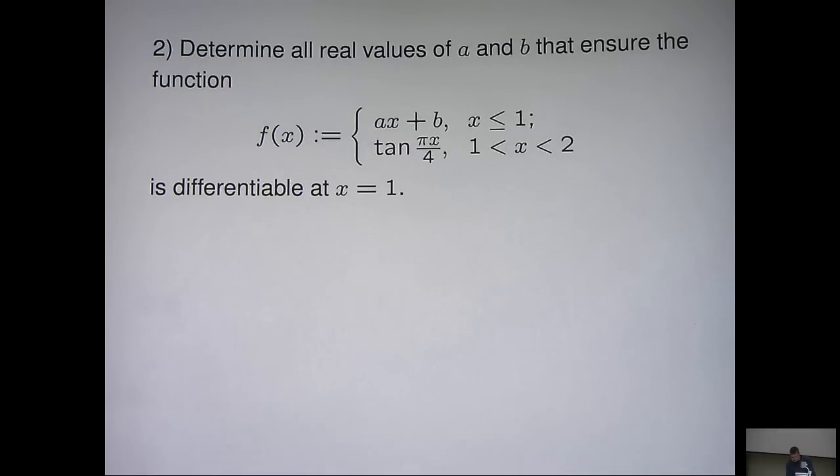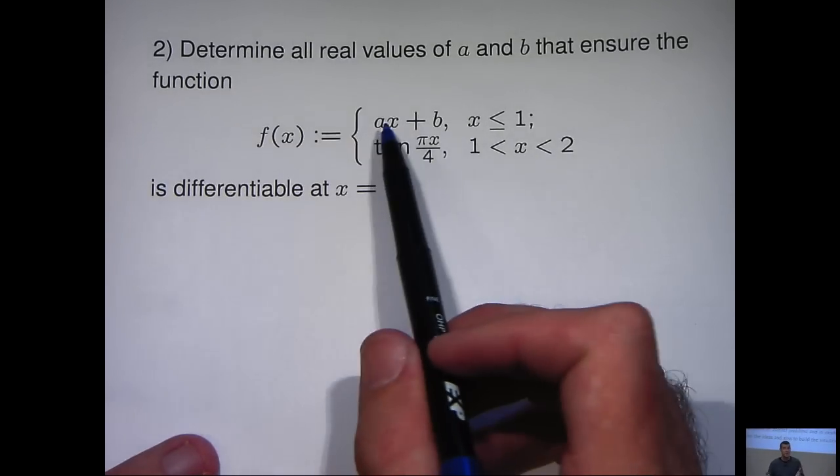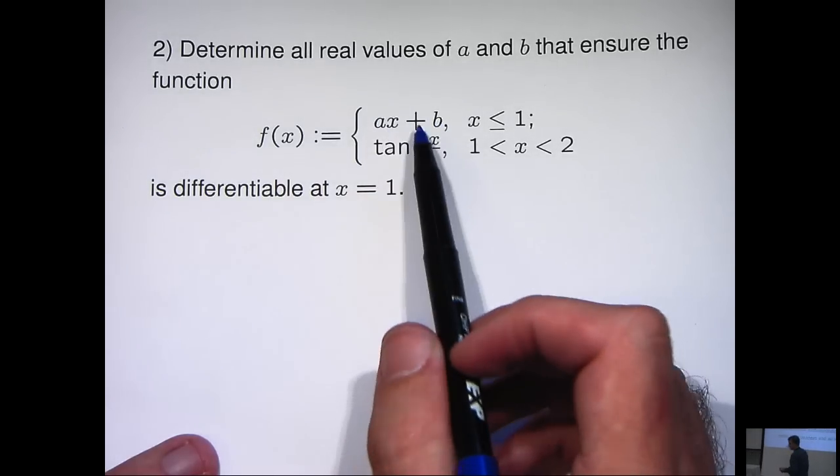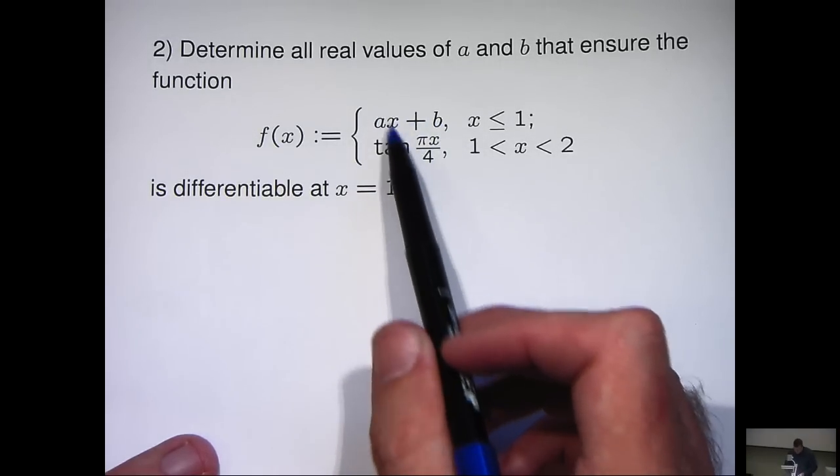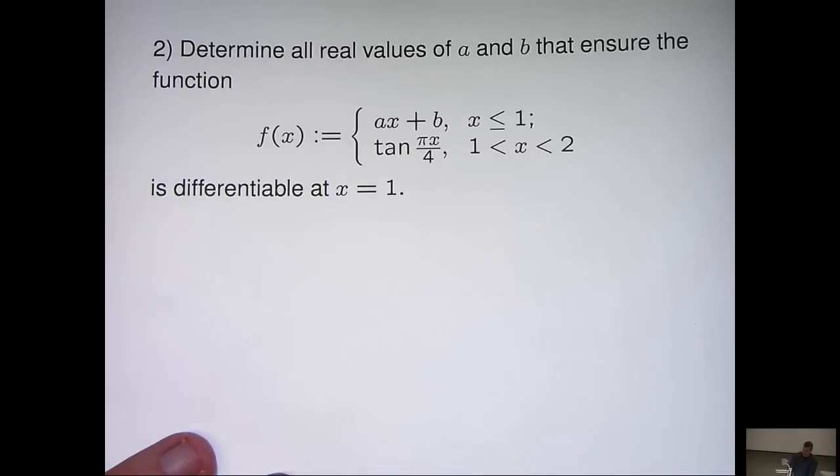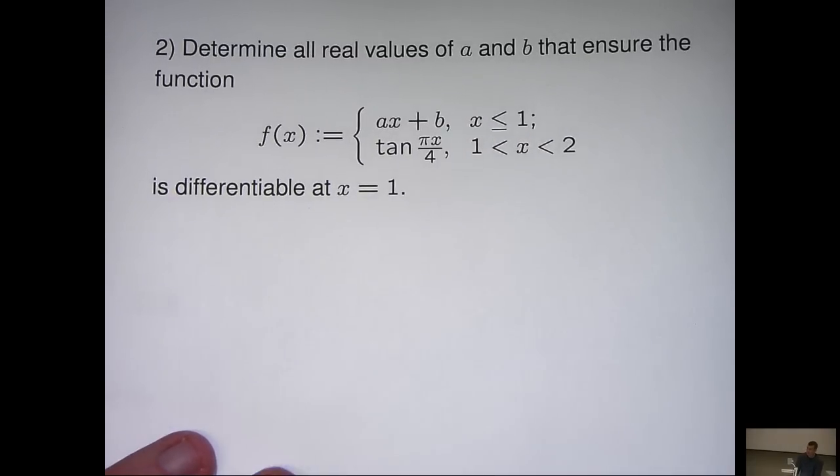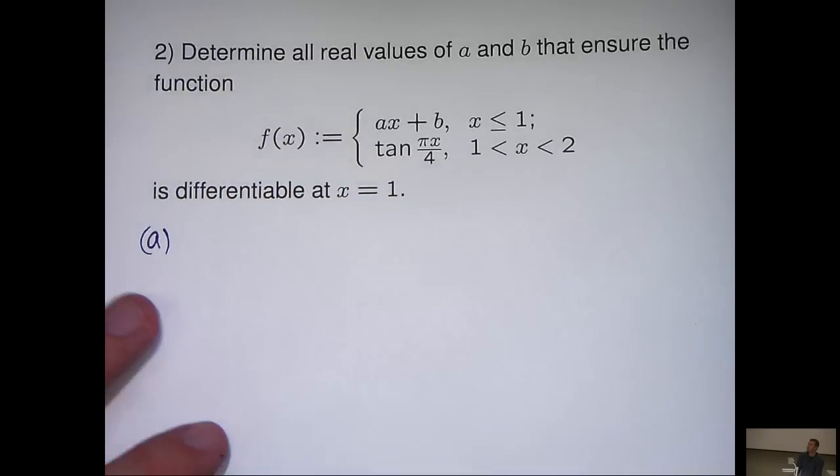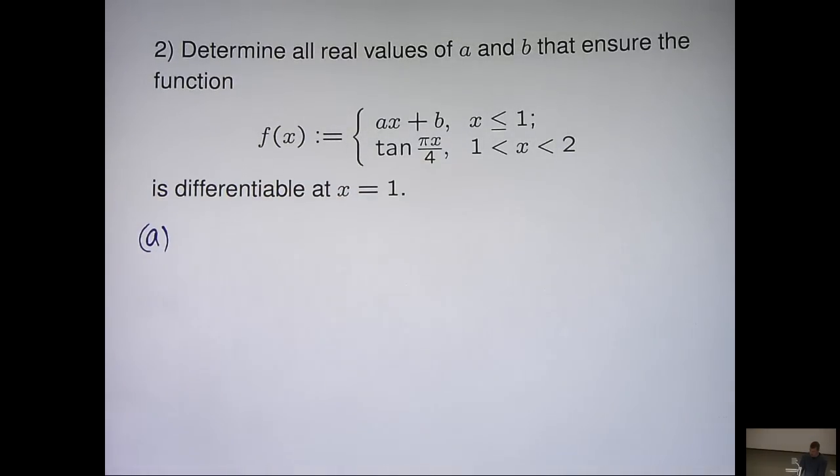Now we're going to have two parts to this solution. Essentially the challenge is to define or choose numbers a and b such that we can piece these two parts together and make a nice smooth join at the point x equals 1. To do that we're going to have a two part approach.